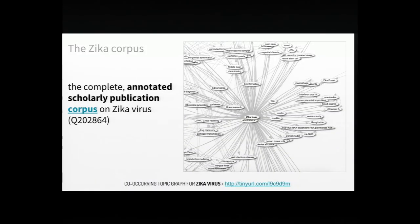We also have very specialized corpora that don't have a specific relation to Wikipedia but can serve as highly curated linked bodies of knowledge for specific communities. This is an example of what we think is the entire scholarly publication corpus on Zika virus — a couple of thousand papers, fully annotated with authors and institutions through a series of human and automated curation processes — as an object that can be studied, visualized, and built upon.